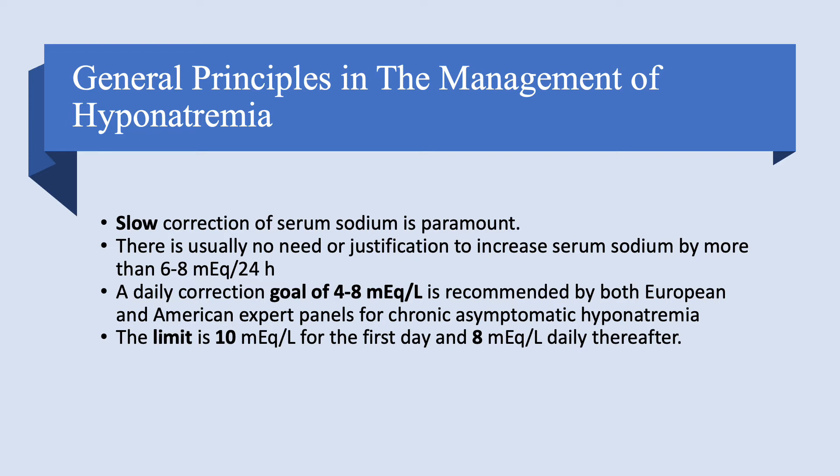For chronic asymptomatic hyponatremia, 4 to 8 mEq/day is a very reasonable goal. The limit is 10 mEq — meaning you should not go beyond 10. If you go beyond 10, you may need to take steps to lower the sodium. The goal is 4 to 8 mEq per 24 hours; the limit is 10 mEq/L for the first day and 8 mEq/L daily thereafter.